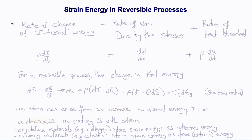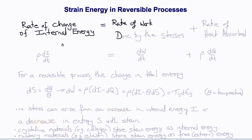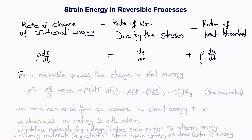The next question is: what does the strain energy mean in a reversible process? To answer this, let's consider the conservation of energy, which states that the rate of change of the internal energy per unit volume equals the rate of work done by the stresses plus the rate of heat absorbed. We write: rho di/dt equals dW/dt plus rho dq/dt. For a thermodynamically reversible process, the change in total entropy dS equals dq over theta, where q is the heat and theta is the temperature.